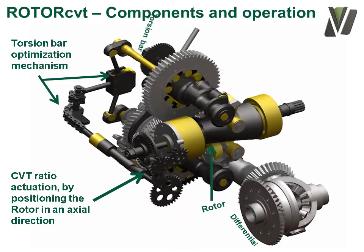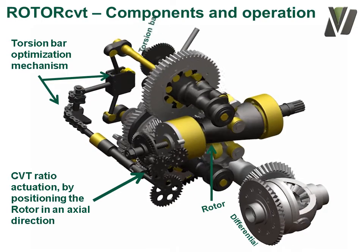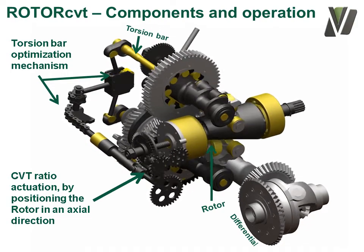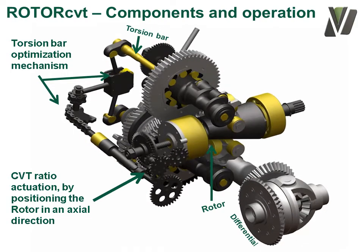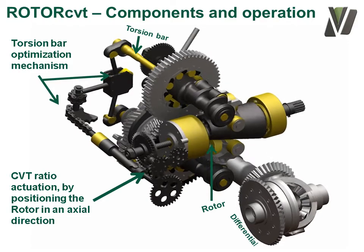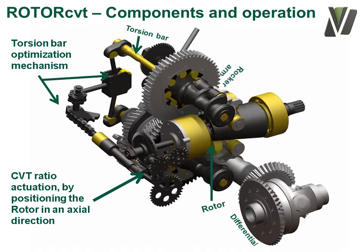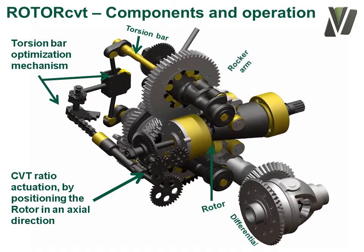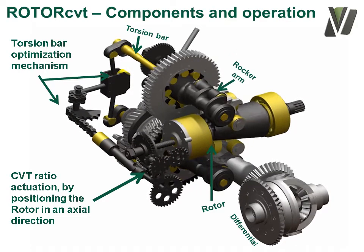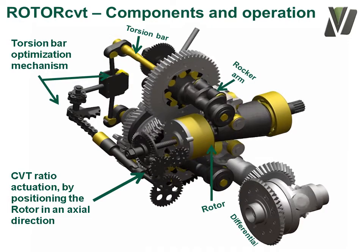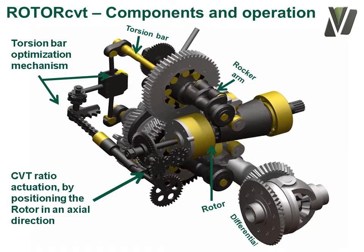This has the effect of turning the torsion bar ends away from each other, therefore increasing the torsion bar torque on the rocker arms, which is needed in higher ratios as the result of the large oscillation of the rocker arms.